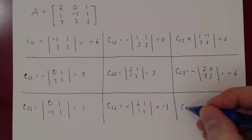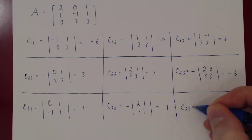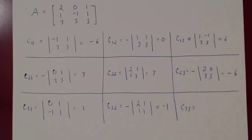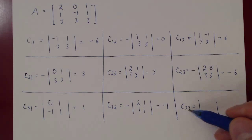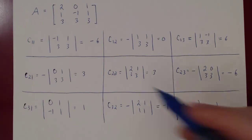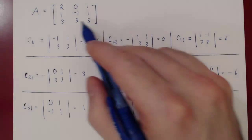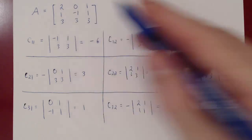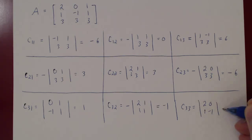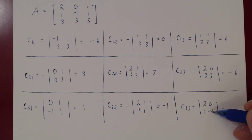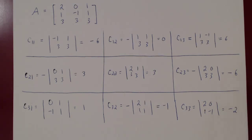And finally C33: 3 plus 3 is 6, which is even, so no negative sign. The determinant of A after we delete the third row, third column gives us 2, 0, 1, negative 1. We get 2 times negative 1, which is negative 2, minus 0, hence negative 2.